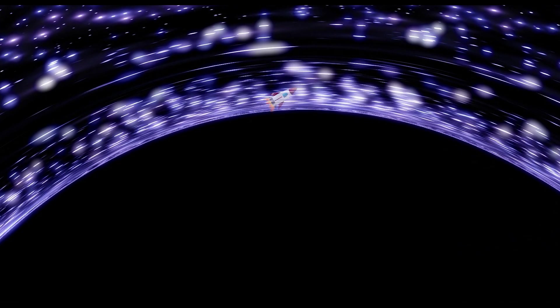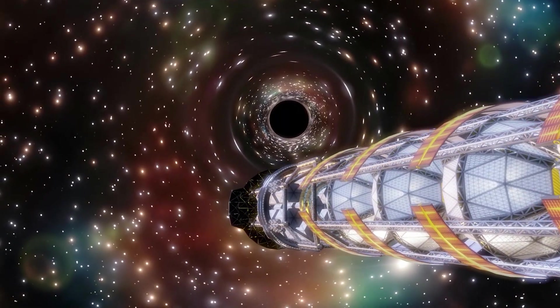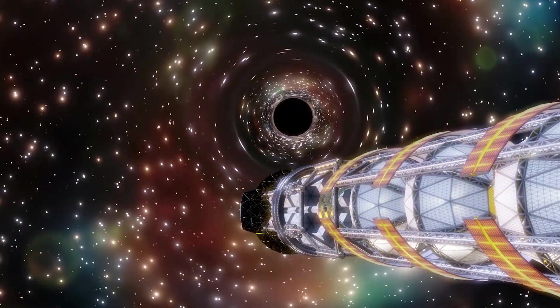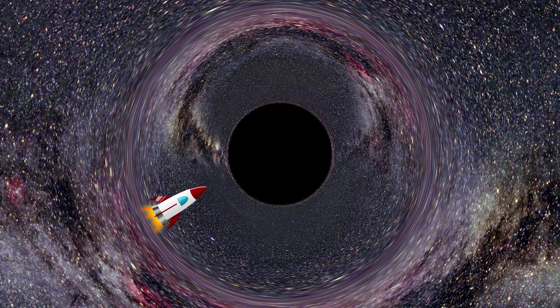At this point, we reached the photon sphere, where light itself orbits the black hole. Theoretically, we could see our own rocket by looking at the side, as the light reflected from the ship goes around the black hole and arrives back at us. As you might know, gravity also affects time. On Earth, this is unnoticeable, but near such bodies with immense gravity as black holes, time would drastically slow down.